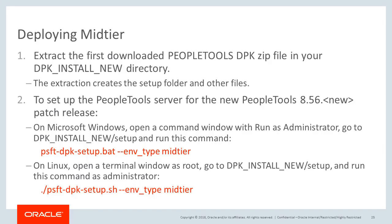To deploy the middle-tier, extract the first downloaded PeopleTools DPK zip file in your new PeopleTools DPK directory. The extraction creates the Setup folder and other files. Use the Setup command with the Mid-tier option. On Microsoft Windows, open a command window with Run as Administrator, go to the new PeopleTools DPK directory/Setup, and run the Setup command with the Mid-tier option. On Linux, open a terminal window as root and go to the PeopleTools DPK directory/Setup and run the command as shown.